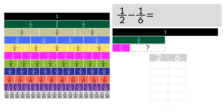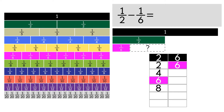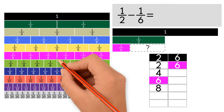We can find it by using multiples. First, we list the multiples of 2: 2, 4, 6, 8, and so on. Now we list the multiples of 6 until we have a common multiple with 2: 6. As you can see, 6 is the common multiple.